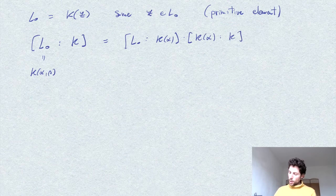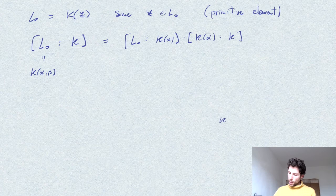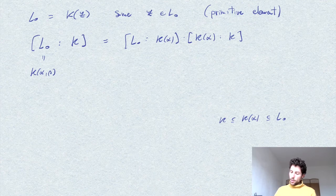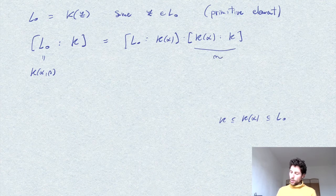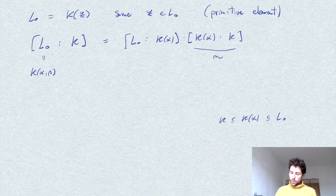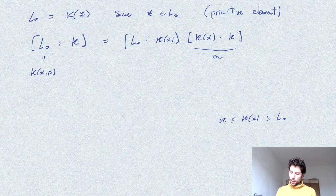So here I'm looking at the chain k of alpha, L0, which is k of alpha and beta. And this is n by our assumption, and L0 and k alpha are different. So this is strictly bigger than 1.